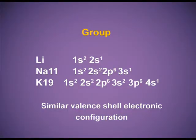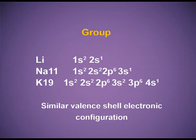Let us take an example of a group. Lithium, sodium, and potassium are all alkali metals — the first group elements. Lithium, atomic number 3: electronic configuration 1s2 2s1. Sodium, atomic number 11: configuration 1s2 2s2 2p6 3s1. Potassium, atomic number 19: configuration 1s2 2s2 2p6 3s2 3p6 4s1. From the electronic configuration, we can see that they all have similar valence shell electronic configuration and hence similar properties, and are grouped together in the first group.